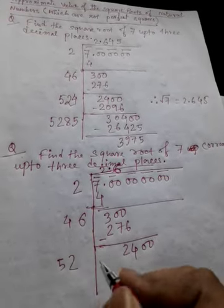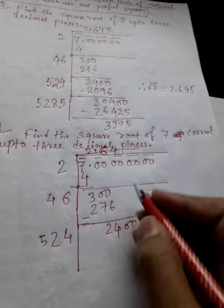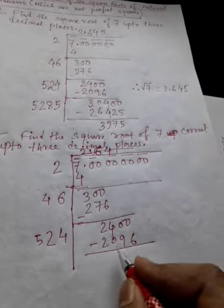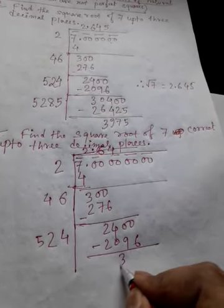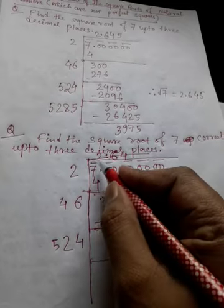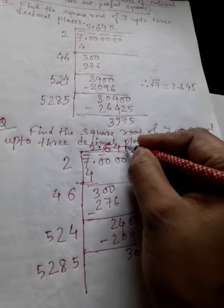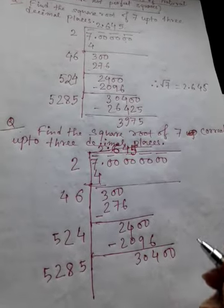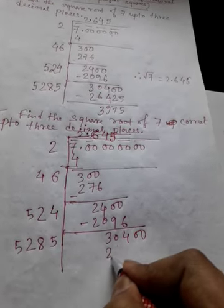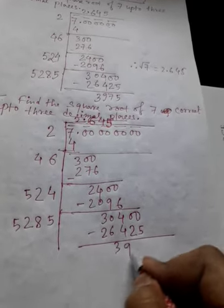Double of 26 is 52. If we take 4 here, we take 4 in the quotient too. So 524 into 4 gives us 2096. If we subtract, the remainder is 304. Bring another pair of zeros. Double of 264 is 528. If we take 5 here, we take 5 in the quotient as well. So 5285 into 5 is 26425, and the remainder is 3975.